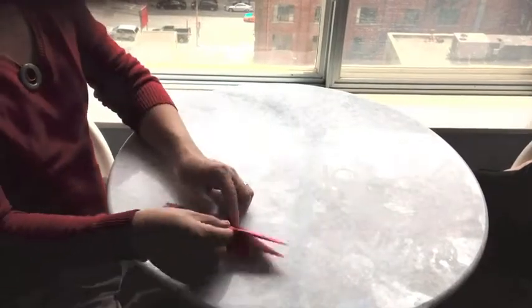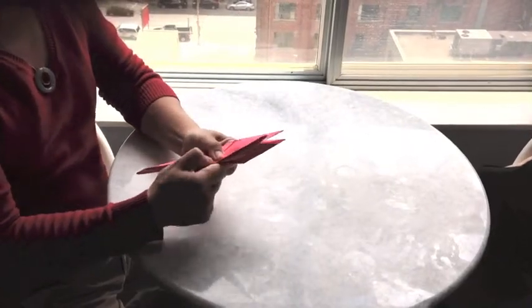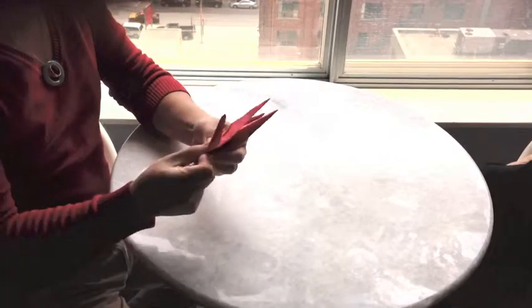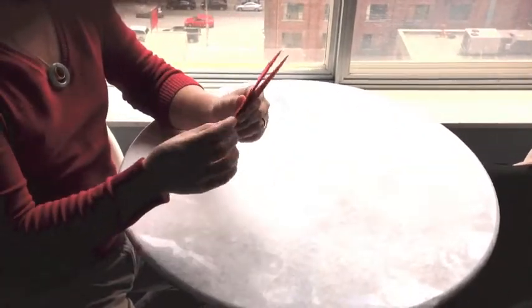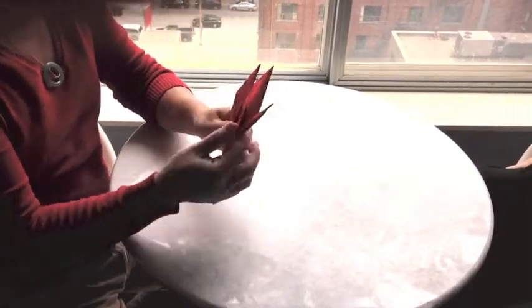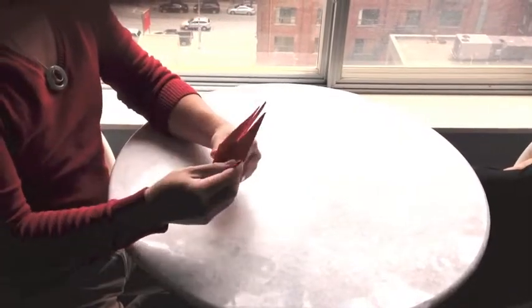Now you're going to turn this like so to create a crease so that you can fold the head and the tail. Bring it back down again. And now you just fold it in, and then lift it up one side. Lift it up on the other side.